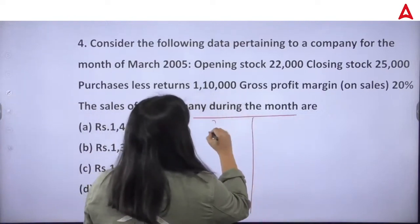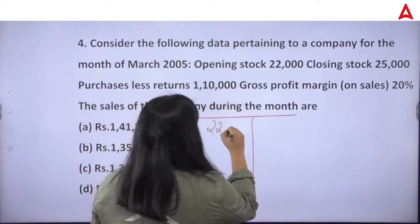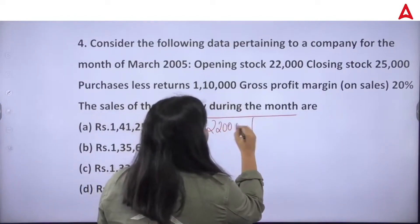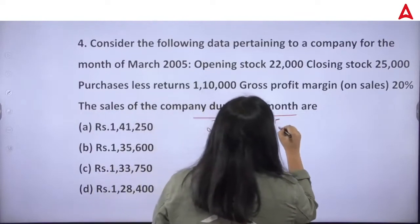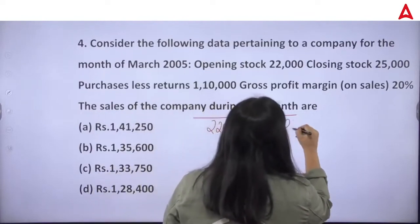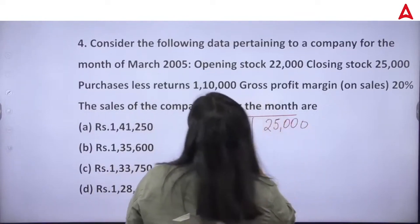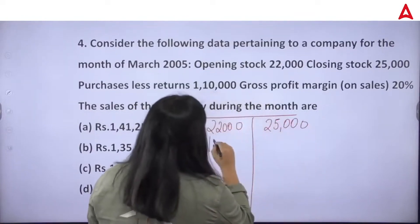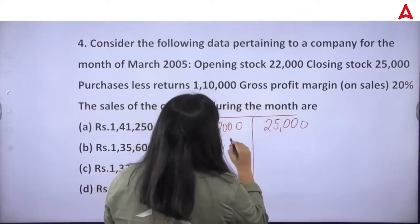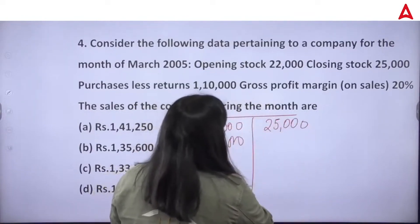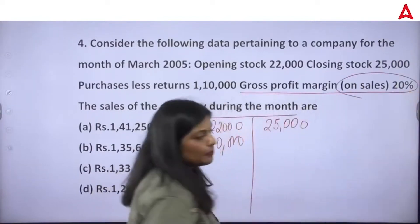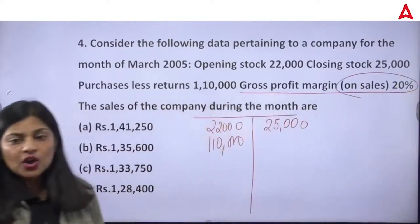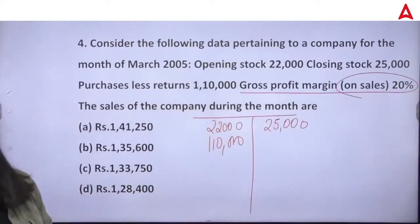Opening stock you have given: $22,000. Closing stock you have given: $25,000. Purchase less return you have given: $1,10,000. You have said that gross profit margin is 20% — that is on sales.